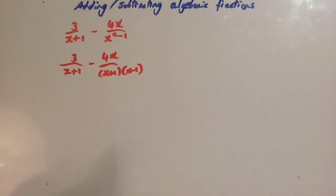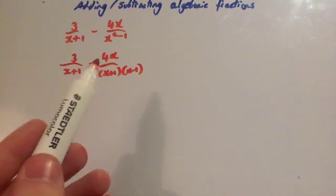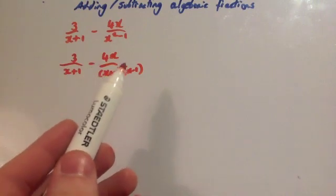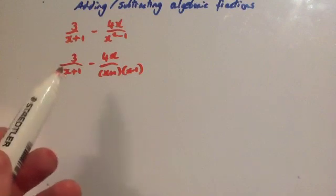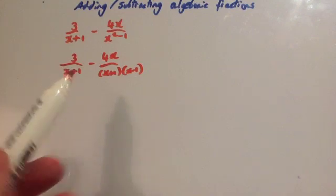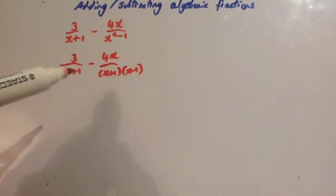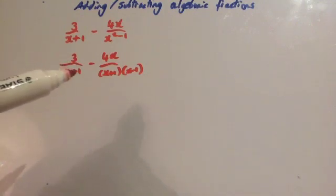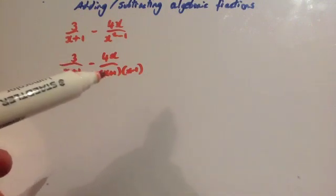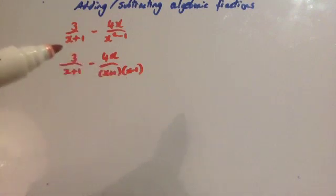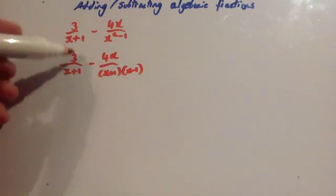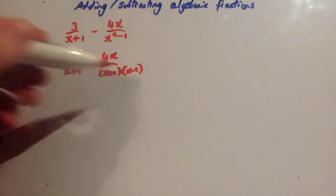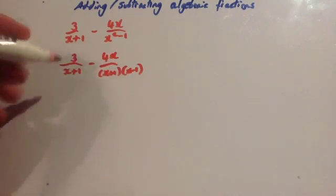Now we need to make them have the same common denominator. This one here has (x plus 1)(x minus 1), and this one has (x plus 1). So if I times the top and bottom of this fraction by (x minus 1), you're going to have an expression over (x plus 1)(x minus 1) and another expression over (x plus 1)(x minus 1), and then we can just work that out.